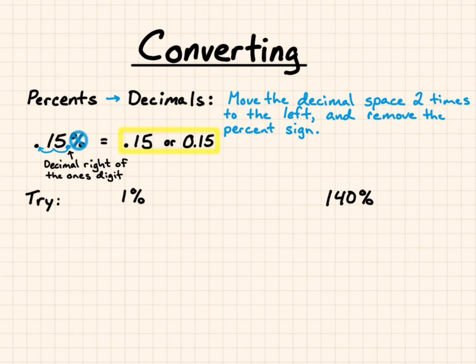We put the decimal place to the right of the ones digit and move it twice. For 1%, there's a void, so we fill it with a 0. You end up with 0.01. For 140%, you move the decimal place twice to the left, and you have 1.4.